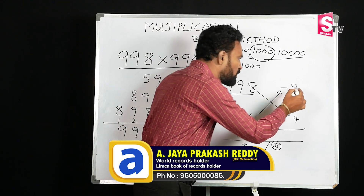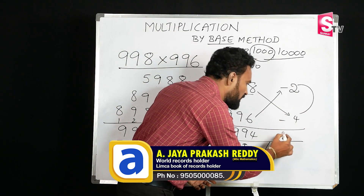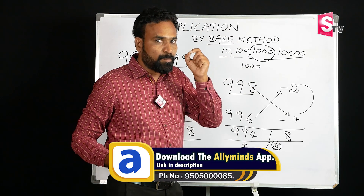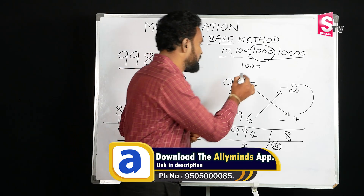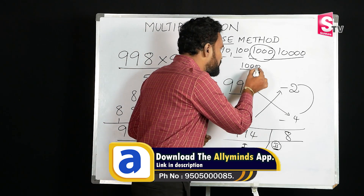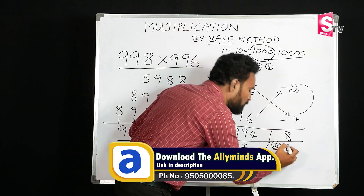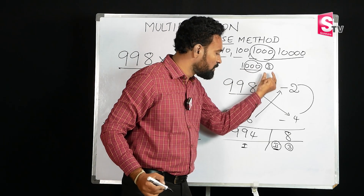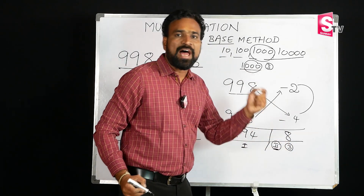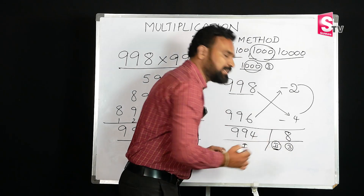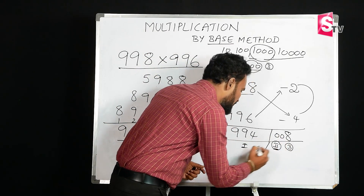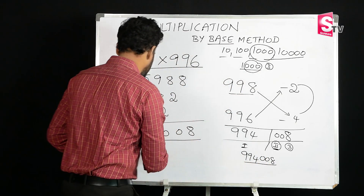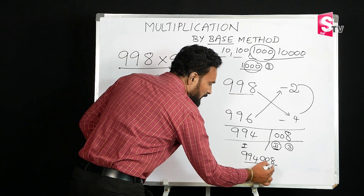The second part is just the two deficiency numbers multiplied: 2 times 4 equals 8. Since the base is 1000 with three zeros, the second part must have 3 digits. So 8 becomes 008. The final answer is 994,008.